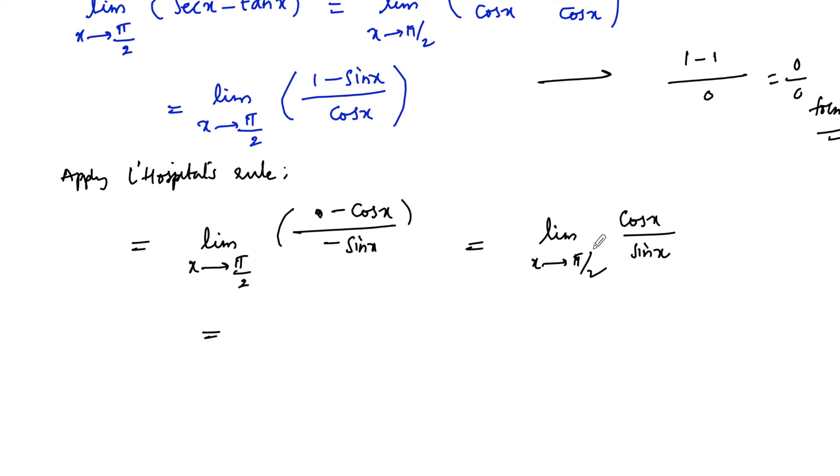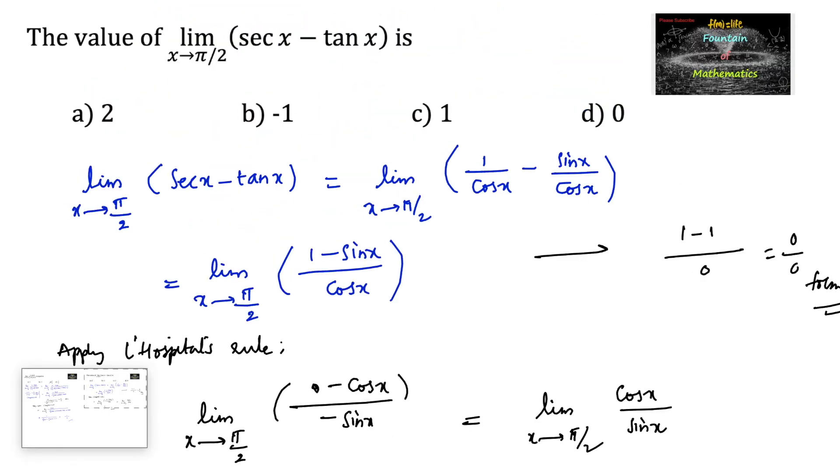Or we can write cos π/2 is 0 divided by sin π/2 is 1. 0 by 1 is a defined form which is 0. So we can give the answer option D.